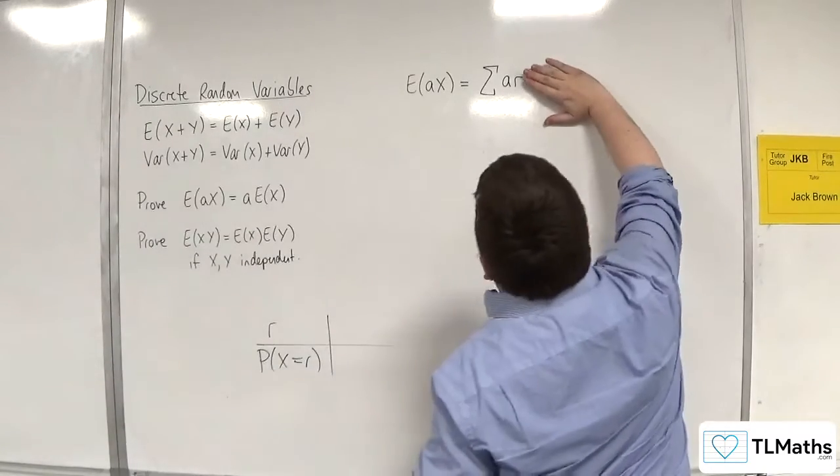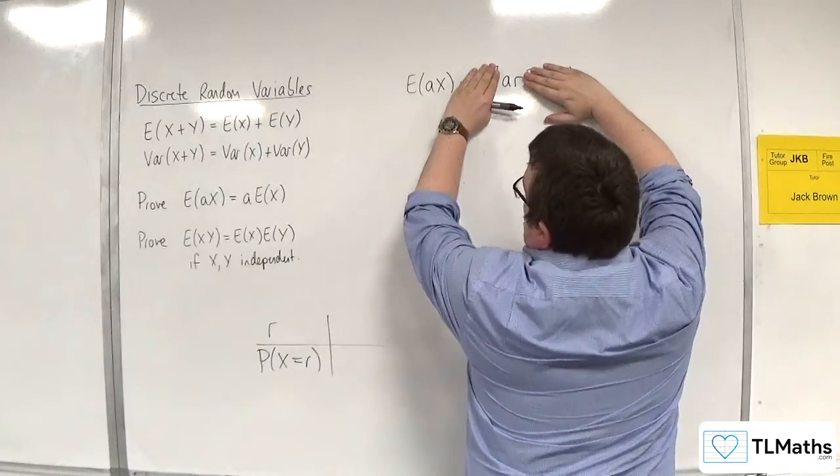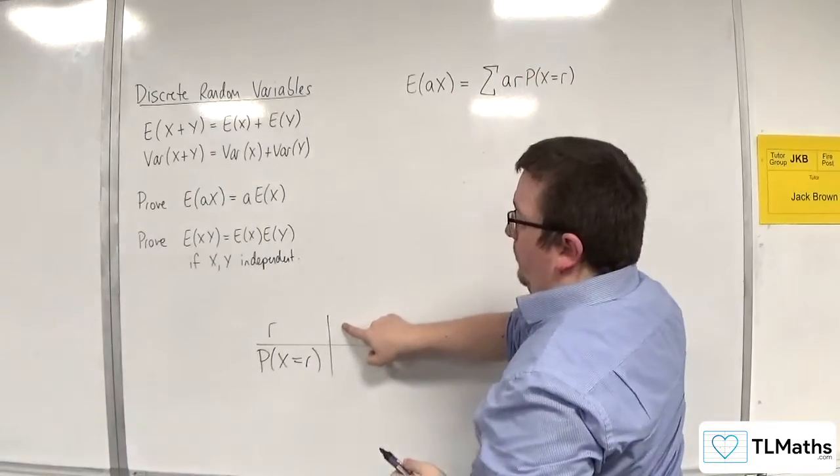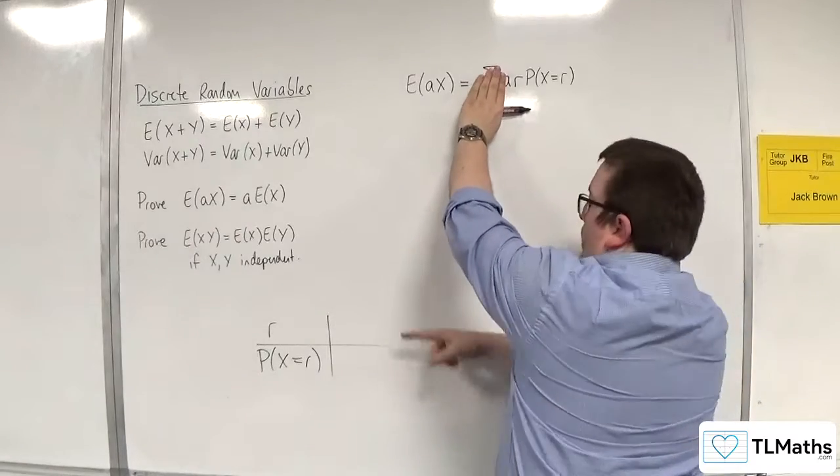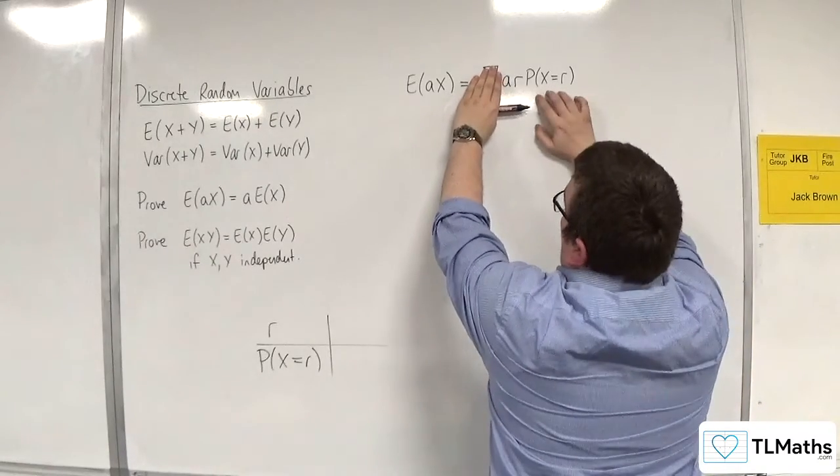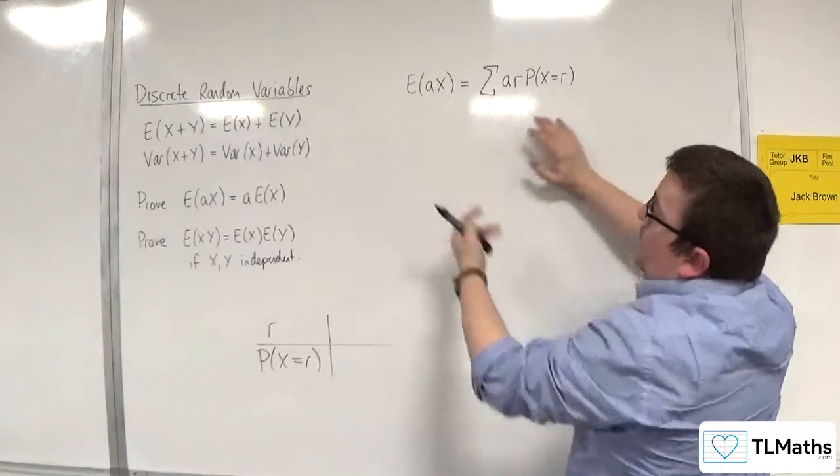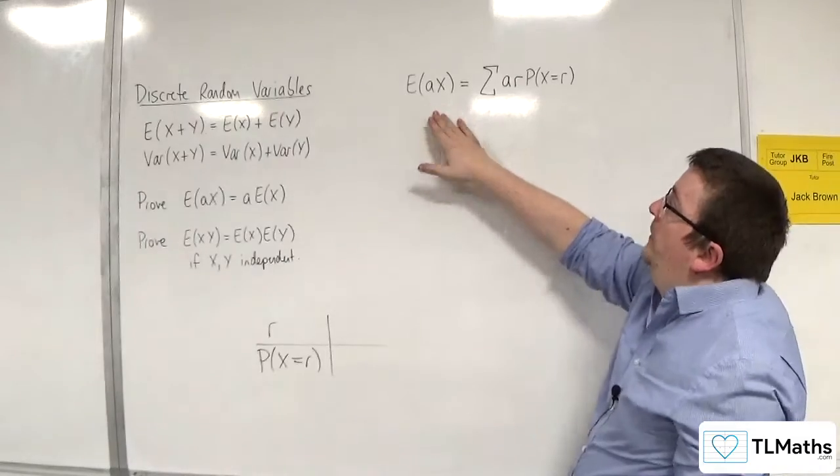So, essentially, I would have the summation of a times each of the r values. And then, in order to work out, I'd have a times whatever that is, a times whatever that is, a times whatever that is. And then I'd multiply each of those by their respective probabilities.